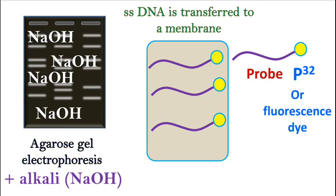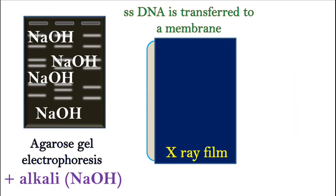or a fluorescence dye at the 5' end of the primer. Once the probe is allowed to hybridize with single-stranded DNA fragments on the membrane, an X-ray film is placed on the membrane to perform autoradiography.